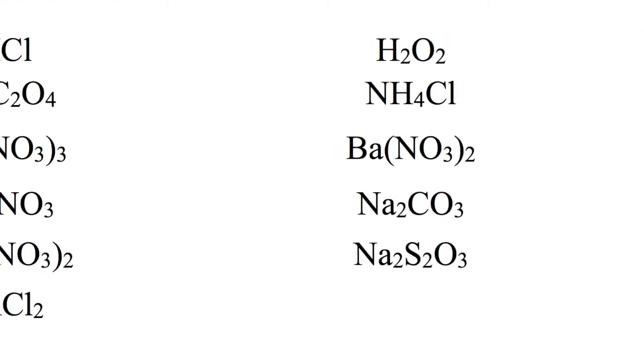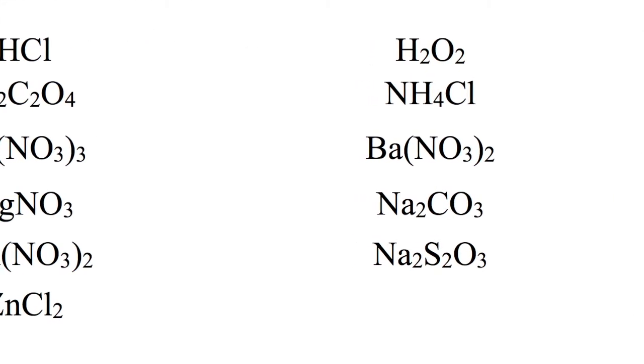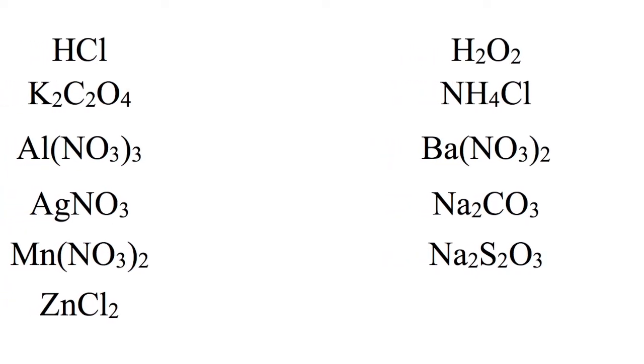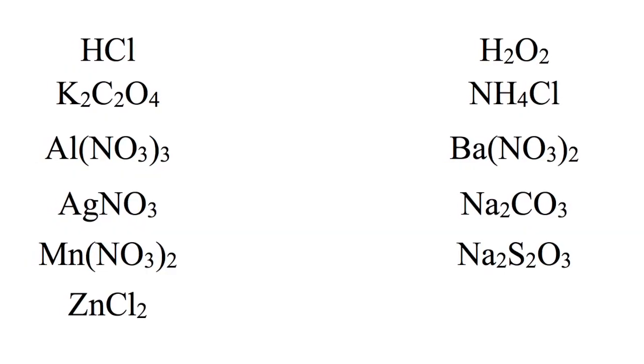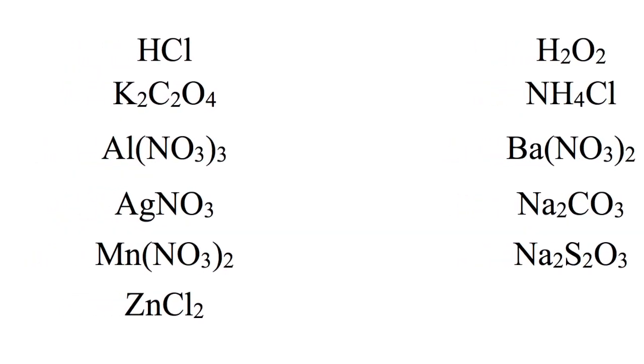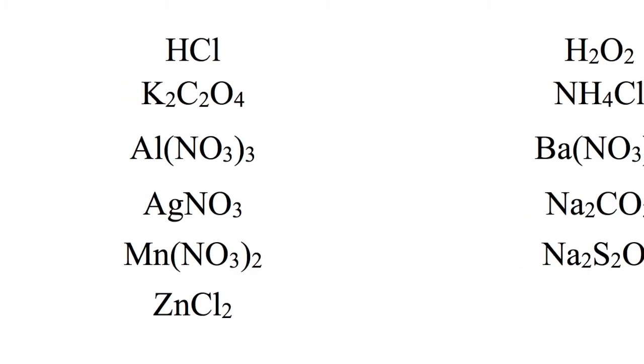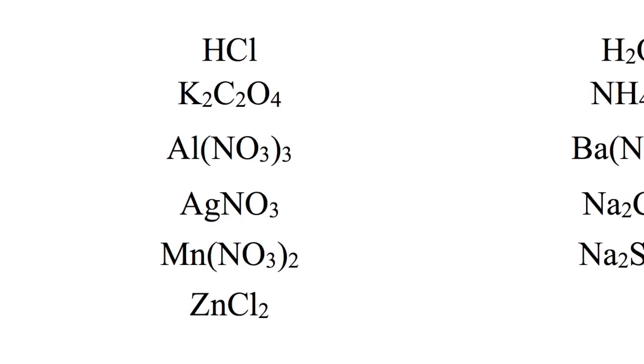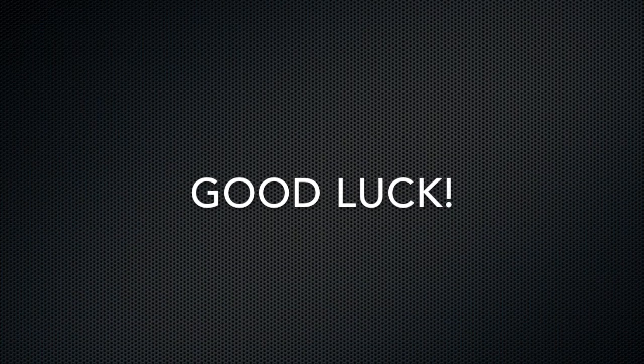For your pre-lab assignment, you'll create a similar flow chart and procedure for the 11 chemicals we're testing in lab. Ideally, you'll perform as few tests as possible in order to identify your solutions, but you don't want to sacrifice the accuracy of your results. So remember that you need to have at least two pieces of evidence to justify your claim that you've identified a particular solution. Good luck!